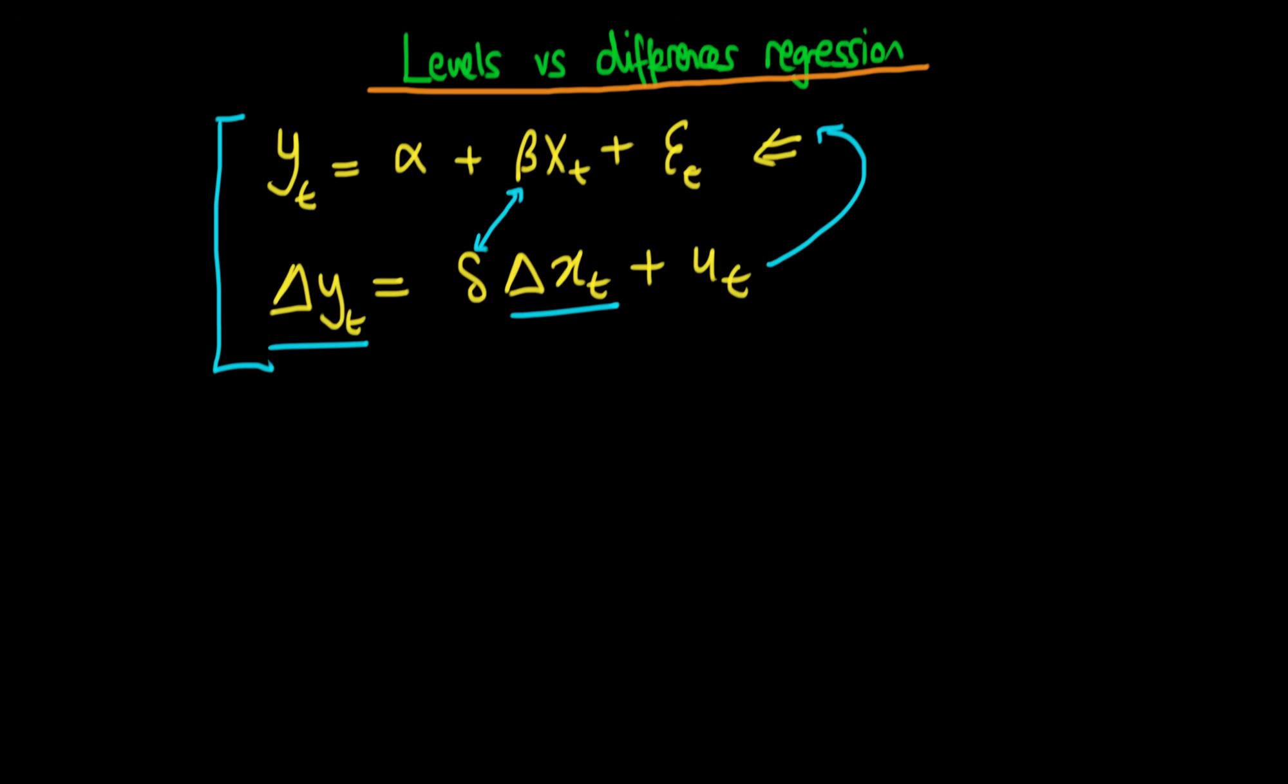Whilst it is certainly the case that if I have a long-run relationship in levels that implies that there will be some sort of stable relationship in first differences, the converse is not necessarily true. To see that the first part of this is true, it's not hard to prove this.